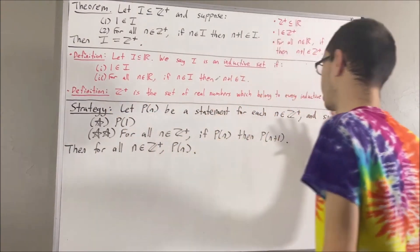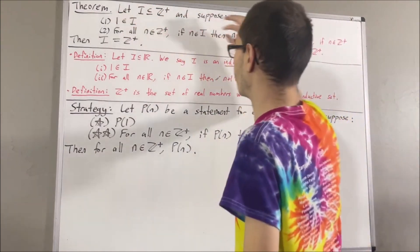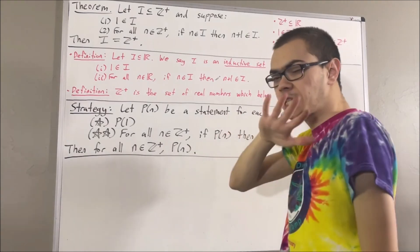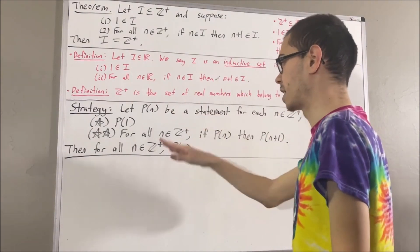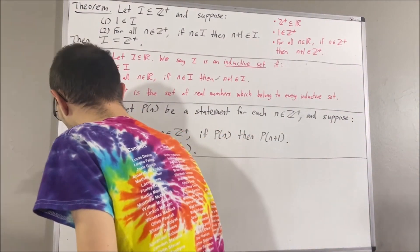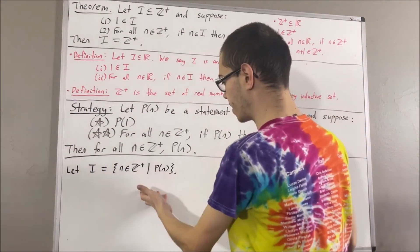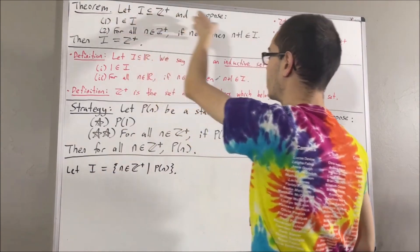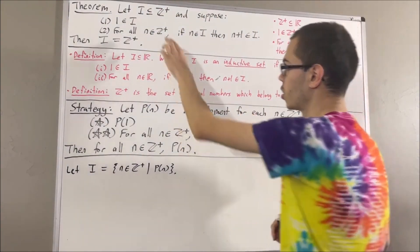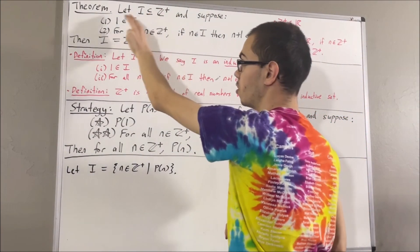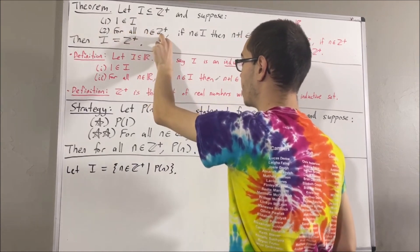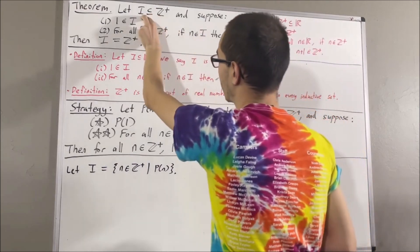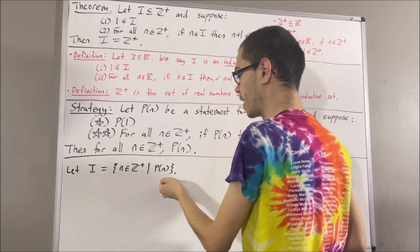The way we can justify this strategy is by applying the theorem that we just proved. We first consider the set of all positive integers such that p holds, and we'll call this set i. The claim is we can show that i is equal to the set of positive integers using the theorem we just proved. To verify that, we want to show that i is a subset of the positive integers, 1 is an element of i, and for all positive integers n, if n is an element of i, then n plus 1 is an element of i. We know that i is a subset of the positive integers — that comes directly from how we've defined i.